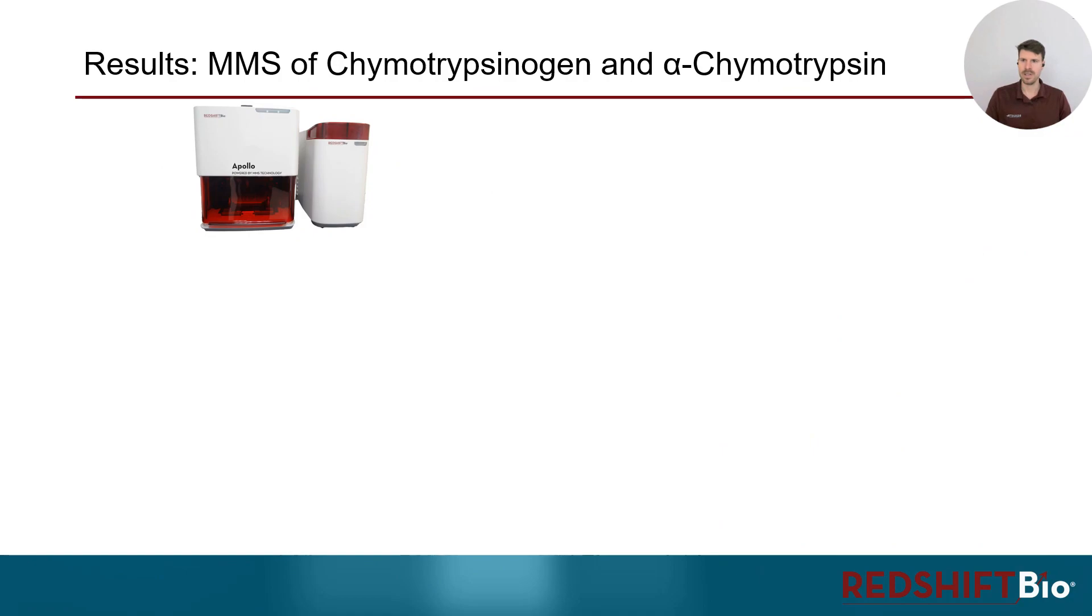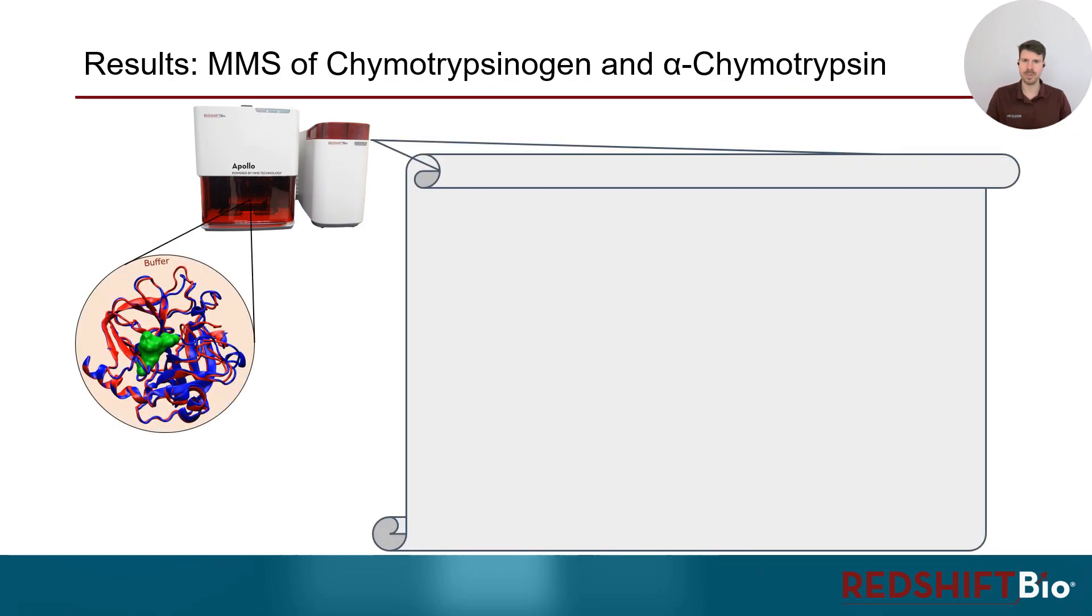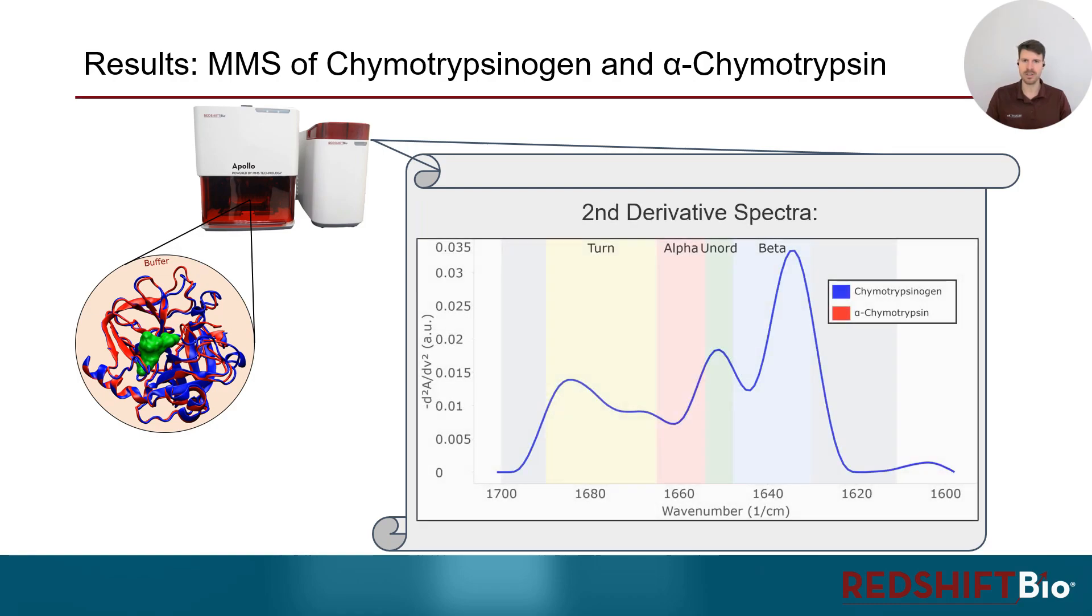In this study, we have analyzed the inactive chymotrypsinogen and the active alpha-chymotrypsin, each dissolved in PBS. To highlight the spectral features, I'm going to present the inverted second derivative spectra.